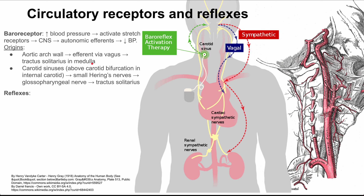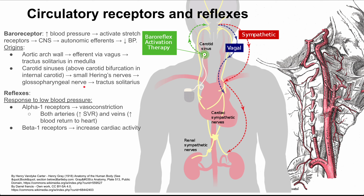The reflexes are what happens after you've gotten that signal into the brain. In response to low blood pressure, you're going to activate alpha-1 receptors and beta-1 receptors. Alpha-1 receptors mainly do vasoconstriction, which happens in both arteries and veins. In the arteries, vasoconstriction increases your systemic vascular resistance, which increases your blood pressure. In the veins, vasoconstriction causes increased blood return to the heart, so you'll have more preload going back to the heart, which also increases your blood pressure.